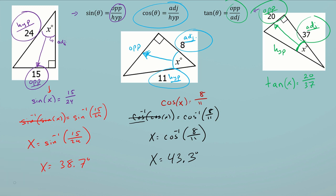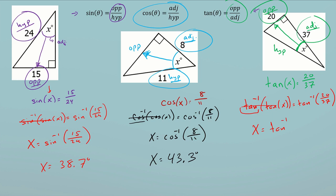So tan of x equals the opposite, which is 20, over the adjacent, which is 37. I'm looking for my angle of reference x, so I need to cancel that tan using tan inverse. Tan inverse of tan of x equals... and what we do to one side we must do to the other, so we bring tan inverse to the right side as well. The tan inverse and tan cancel on the left, leaving x.